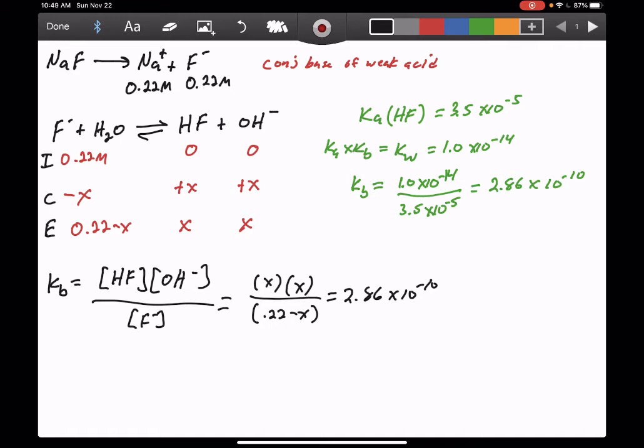We can solve this using a quadratic, but one thing we can do to simplify is to notice that our value for Kb is very tiny, 2.86 times 10 to the minus 10. That means the reaction in equilibrium shifts very little to the product side, so our value of x is so small that 0.22 minus x is pretty much the same as 0.22. This allows us to rewrite this equation as x squared over 0.22, which becomes a much easier problem to solve.